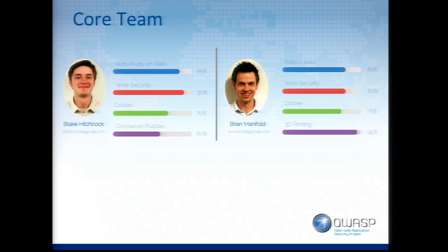My name is Brian. I have a very similar background to Blake. We both work for a group called ASIG, which stands for Advanced Security Initiatives Group, within Cisco. Ruby on Rails developer, a lot of web security, pen testing, and proactive defense.